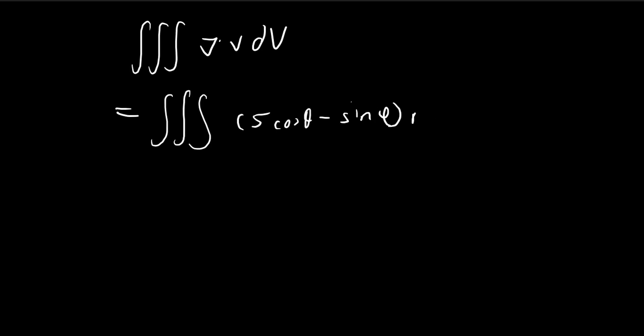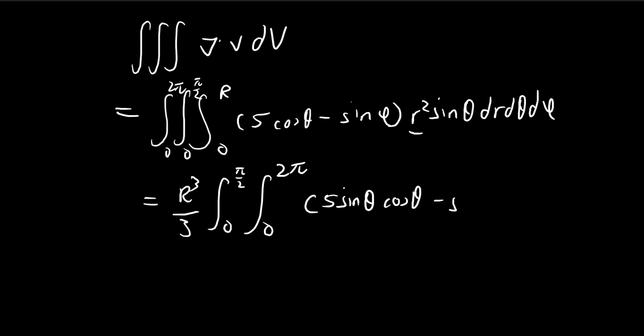so let's copy the expression for the divergence minus sine phi. So dV, that's just the volume unit for spherical coordinates. Now the range goes from 0 to r, 0 to pi over 2 as we discussed before, 0 to 2 pi. So we can evaluate the r term first. It's just r to the power of 3 over 3. And I'm going to evaluate the phi term first, as you will see why.